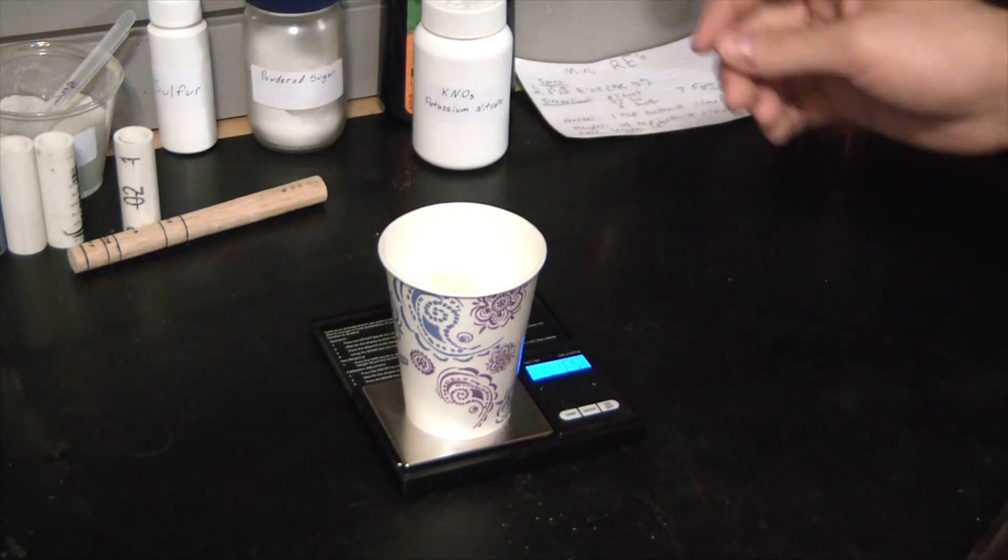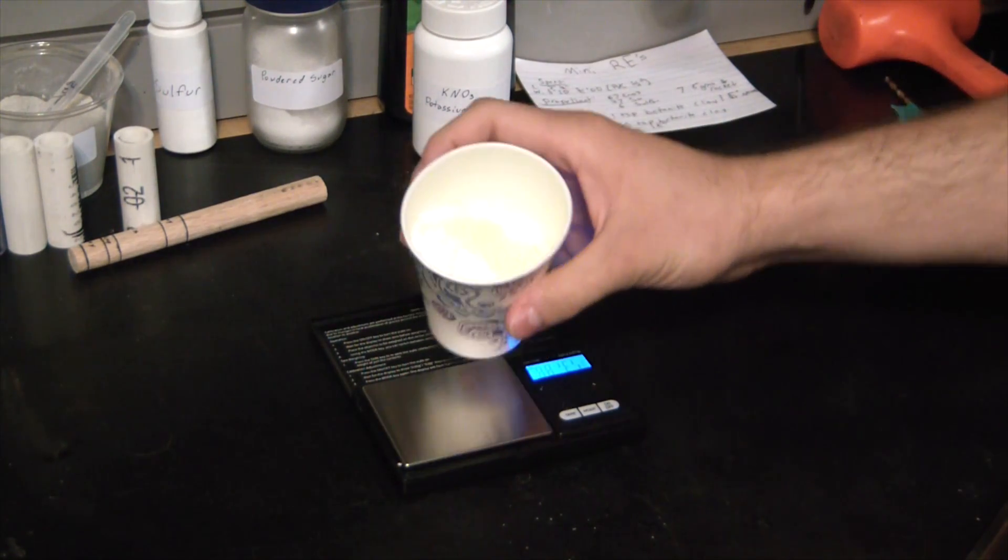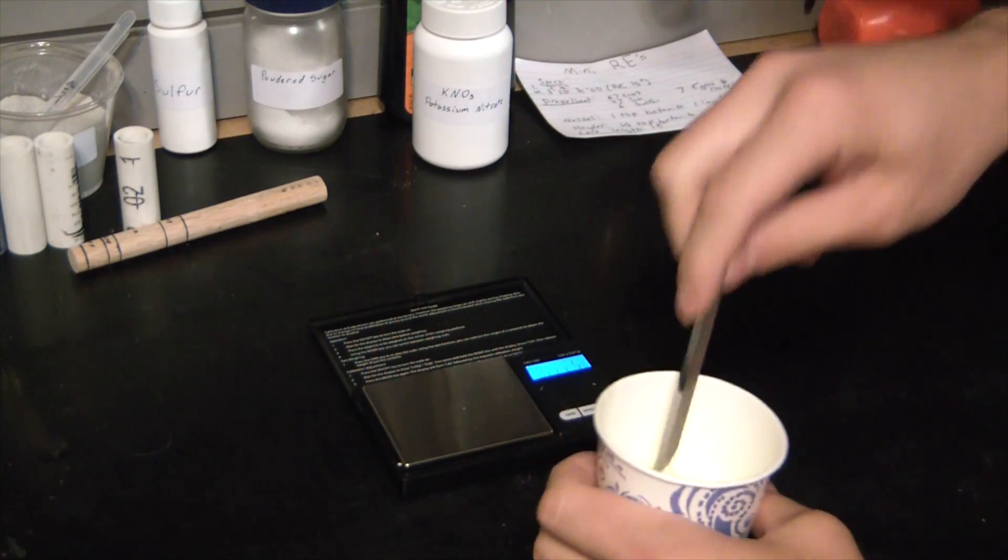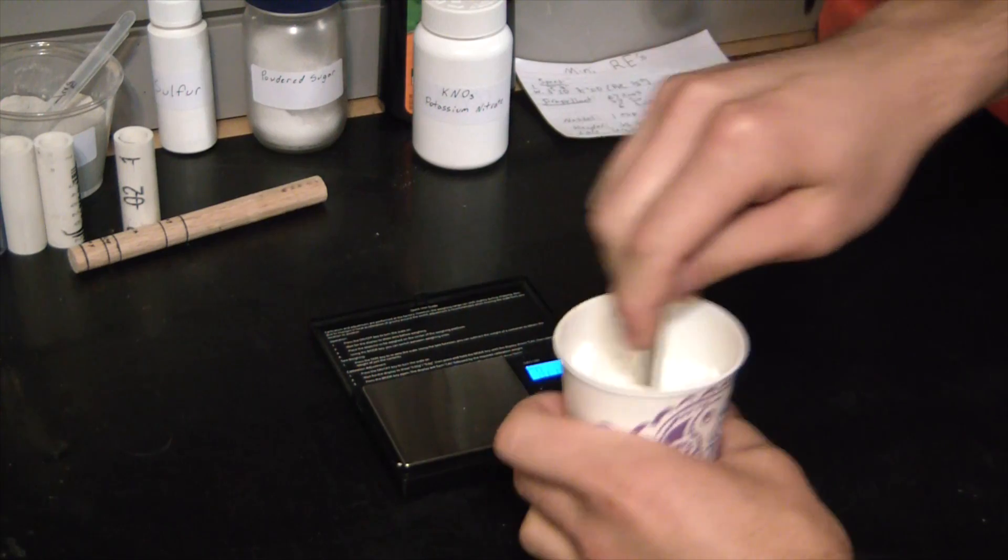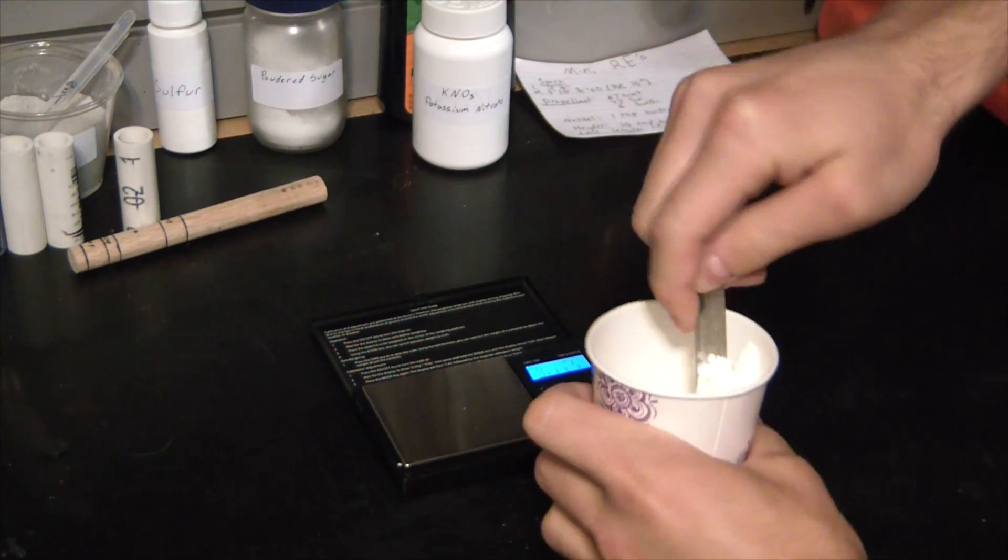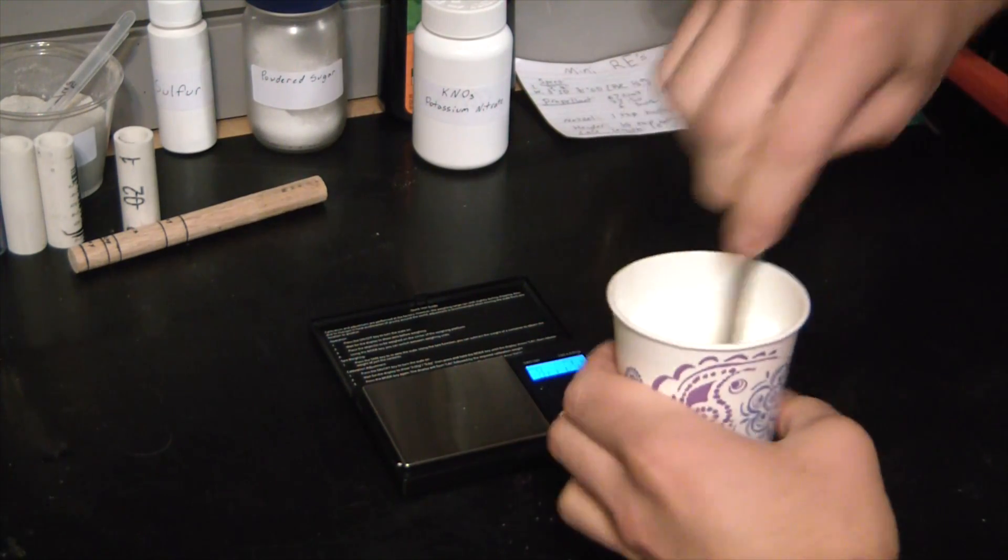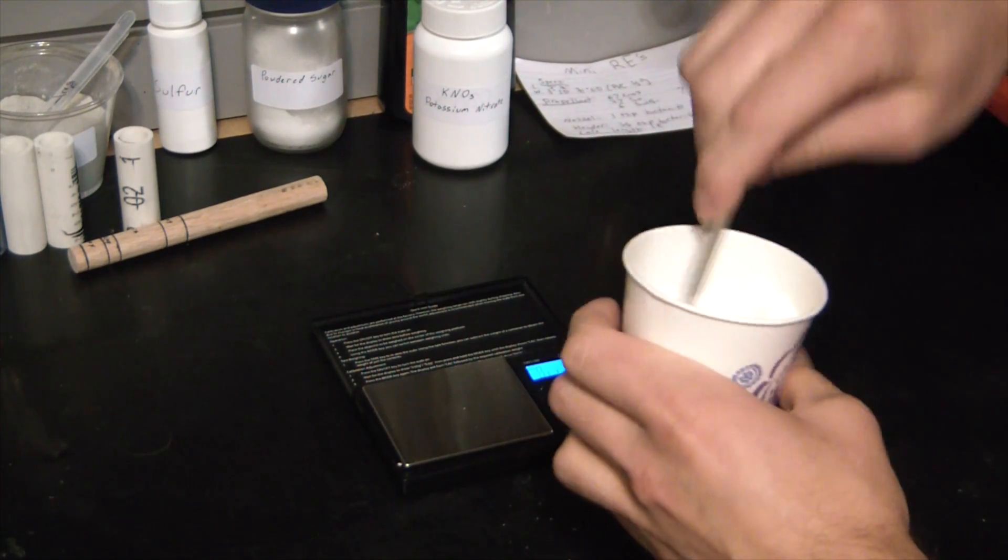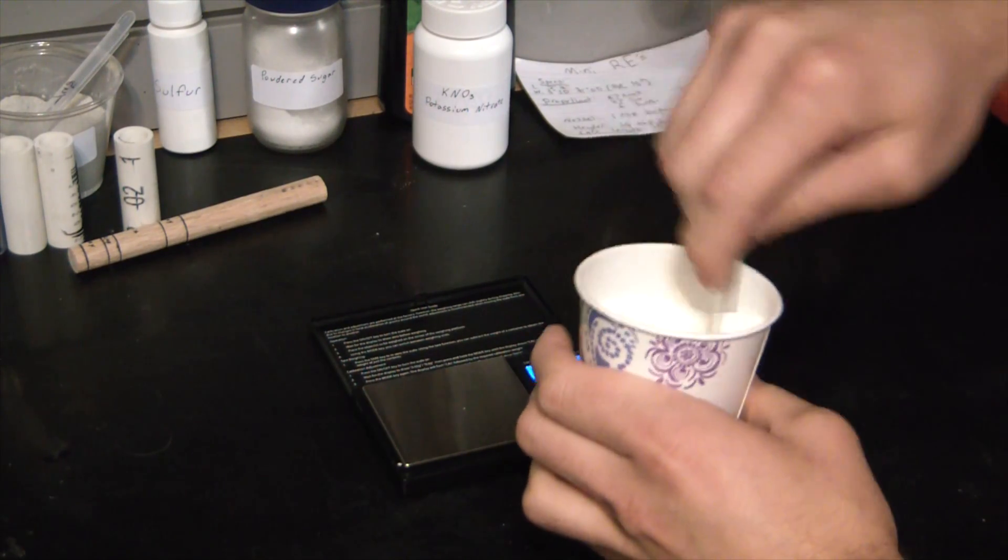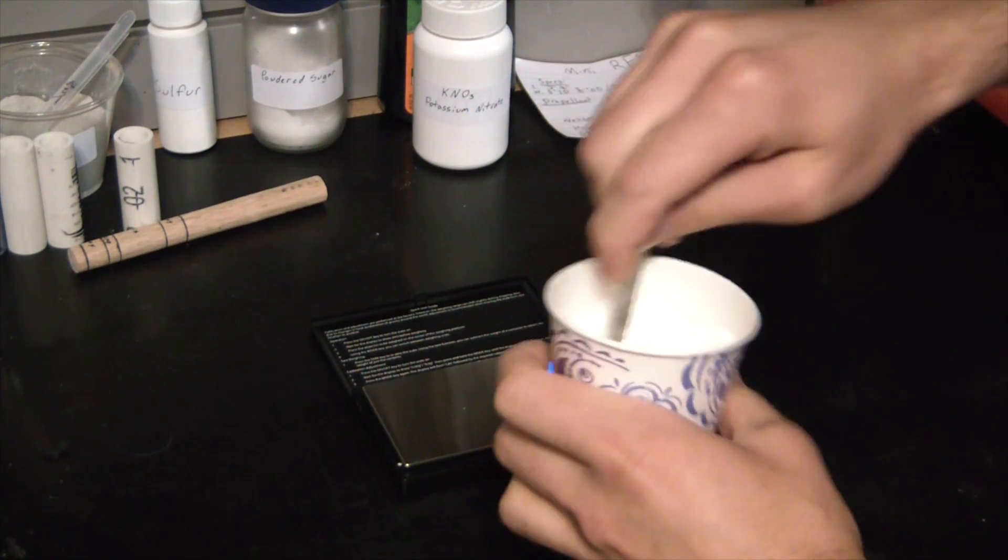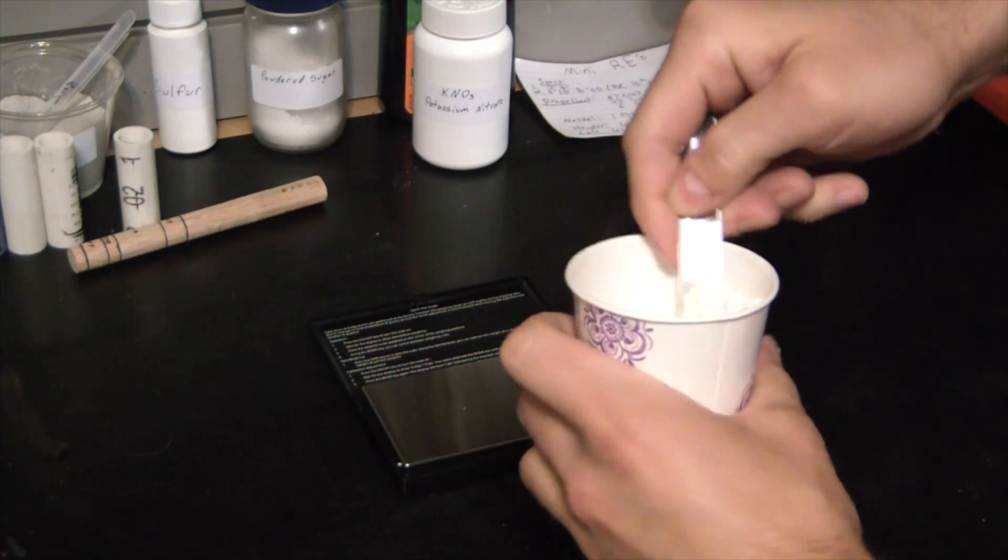This is our rocket fuel. Now we just got to mix it up really good, make sure it's very well combined, no big chunks. At that point we will have a usable rocket fuel. I'm just going to mix this up for a few minutes, make sure any chunks are broken up really well. It wouldn't be a bad idea to throw this in a Tupperware container and shake it up really good.